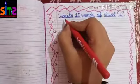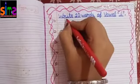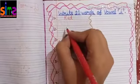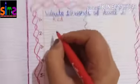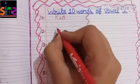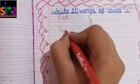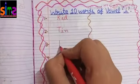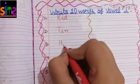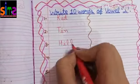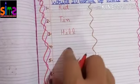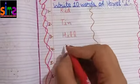Let's start writing. Kids, on first number you all will write KID. On second number you all will write TIN. On third number you all will write HILL. On fourth number you all will write KITE.